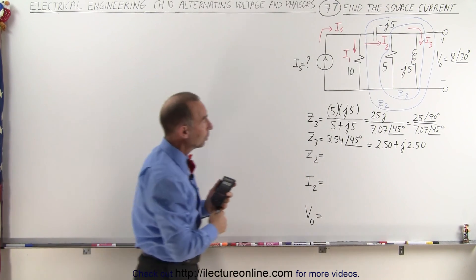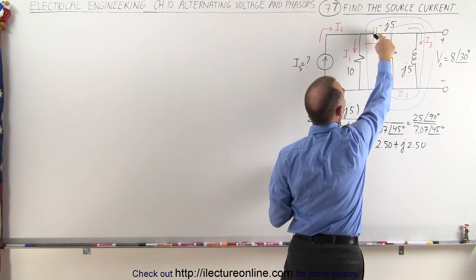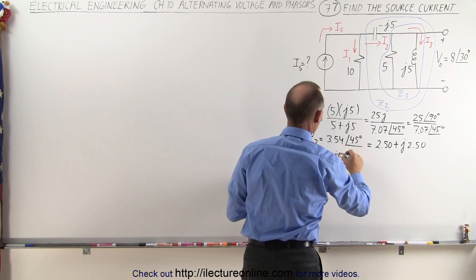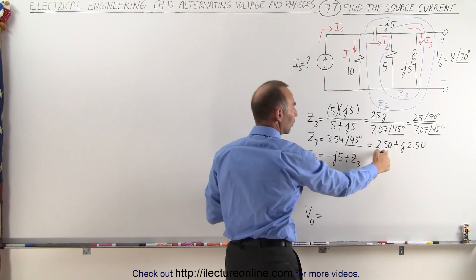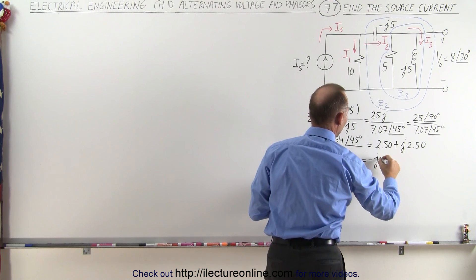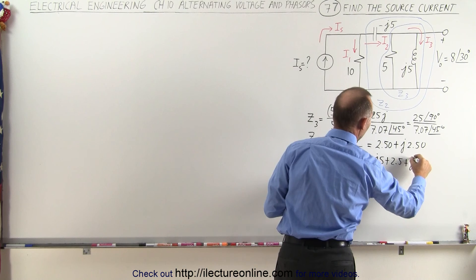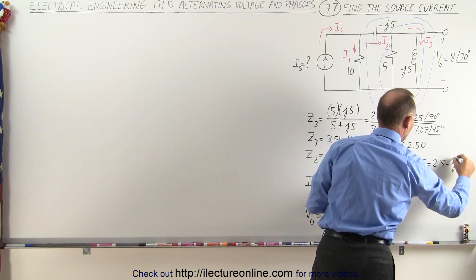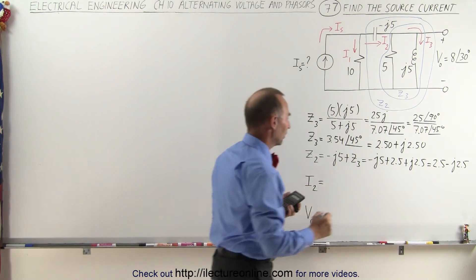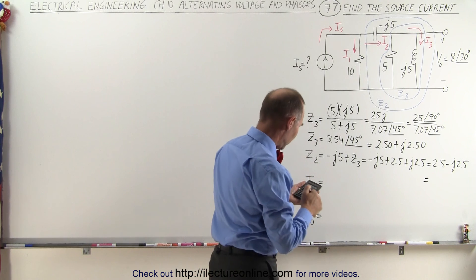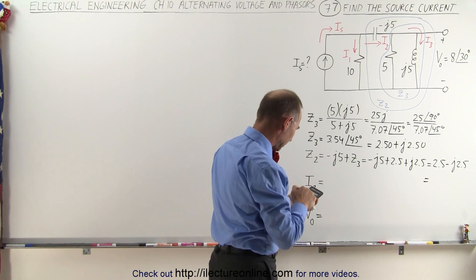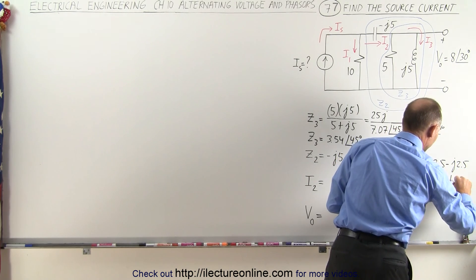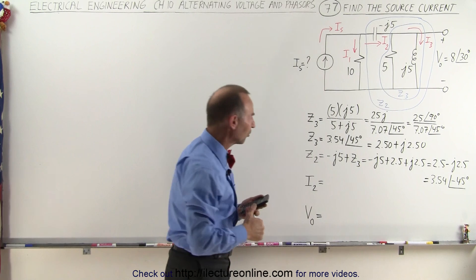The next thing we want to do is calculate Z2. Z2 takes this parallel branch and puts it in series with this capacitor, so we add these two together in series. Z2 equals minus J5 plus Z3, which is minus J5 plus 2.5 plus J2.5. That becomes equal to 2.5 minus J2.5. In magnitude and phase angle format: the square root of 2.5 squared plus 2.5 squared gives us 3.54 with a phase angle of minus 45 degrees.